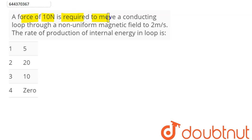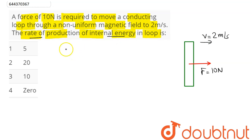So a force of 10 newton is required to move this conducting loop through a non-uniform magnetic field, velocity of two meter per second. Hence, the rate of production of energy means here energy produced per unit time.